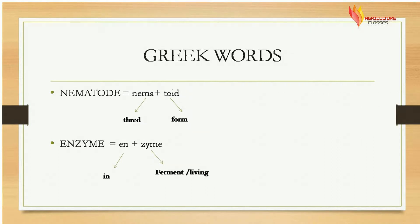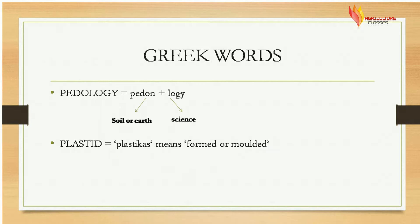Next is nematode. The word is made by nema, which means thread, and oid, which means form. Next is enzyme, where en means in and zyme means to ferment or living. Next is pedology, having two words: pedon, meaning soil or earth, and logi, meaning science. Next is plastid, referring to plastikos, meaning formed or molded.